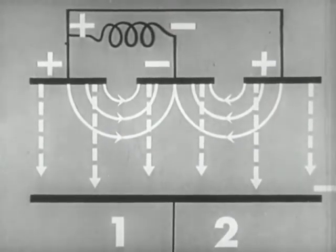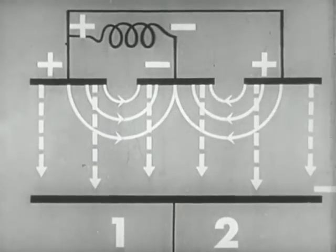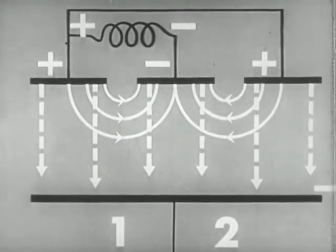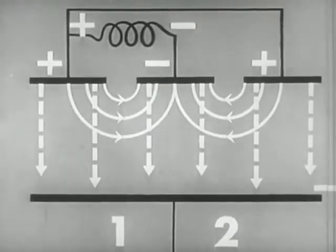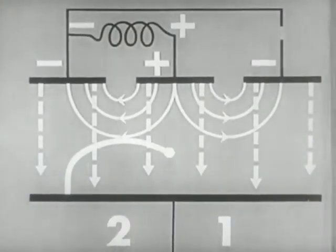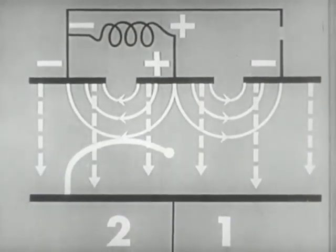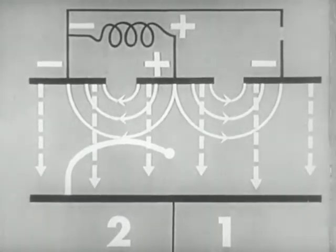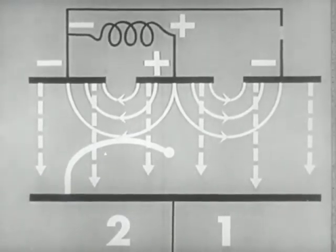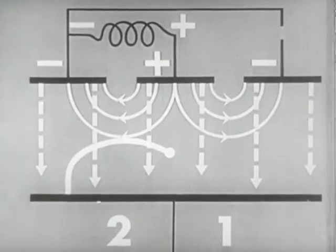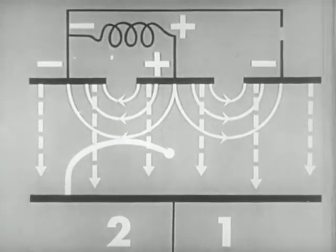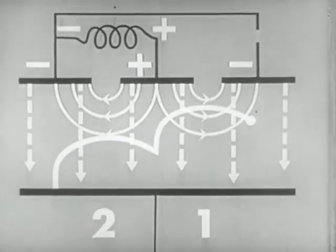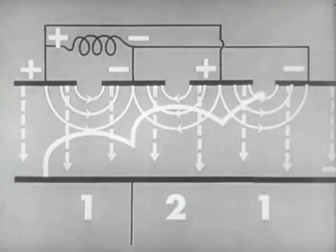The energy given up by the electrons to the RF field will change the polarity of those fields, so that at the end of one half cycle the RF fields will be reversed. Thus the electron, which has completed one half cycle in region one, will now strike region two in the proper phase relationship to give energy to that RF field. This process will continue until the electron eventually reaches the anode.